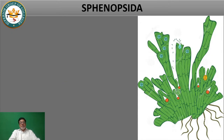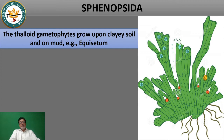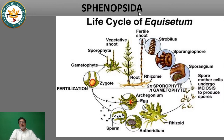When sporangia mature, they produce spores, and the spores germinate to form the gametophyte. The gametophyte produces the sex organs, fertilization occurs, forming a zygote, and embryo development starts. If we look at the life cycle — roots, stem, and leaf are present in the sporophyte. This is a strobilus which bears sporophylls.